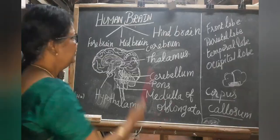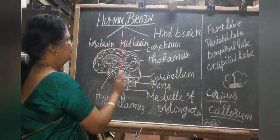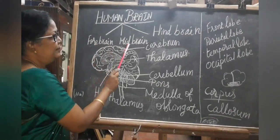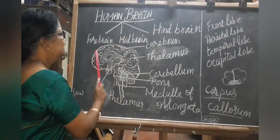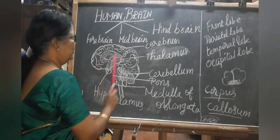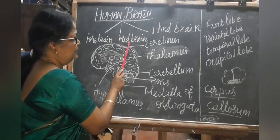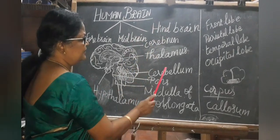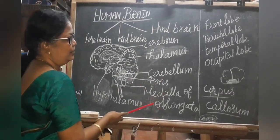The human brain is made up of three parts: forebrain, midbrain and hindbrain. The forebrain consists of the cerebrum and diencephalon. The midbrain has four rounded bodies. The hindbrain consists of the cerebellum, pons and medulla oblongata.